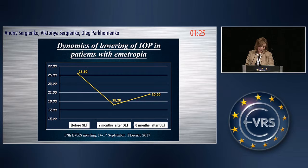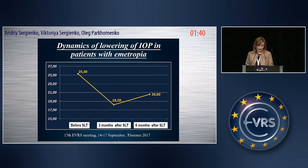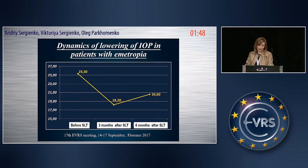In conclusion, selective laser trabeculoplasty in patients with silicone oil-induced ocular hypertension and rhegmatogenous retinal detachment makes it possible to achieve a 20% pressure reduction compared to the initial level in 76% of patients. Six months after SLT, the average hypotensive effect was 5 mmHg in both groups. The intraocular pressure after a single SLT procedure gradually decreased within two months, with the effect lasting up to six months.